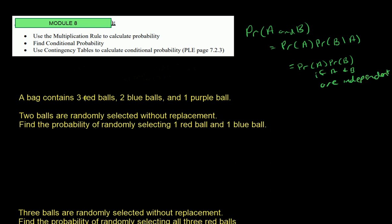A bag contains three red balls, two blue balls, and one purple ball. Two balls are randomly selected without replacement. Whenever you see 'without replacement,' that creates a dependent structure — once you've selected one ball, it's no longer in the bag, which changes the probability of selecting the next ball. So with without replacement, you're not in a situation of independence.